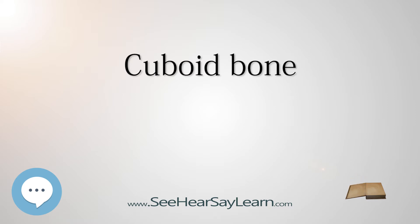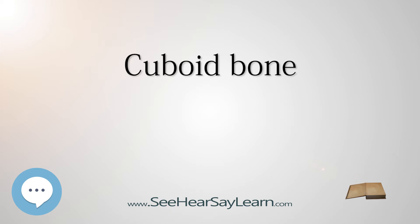The ridge ends laterally in an eminence, the tuberosity, the surface of which presents an oval facet on which glides the sesamoid bone or cartilage frequently found in the tendon of the peroneus longus. The surface of the bone behind the groove is rough for the attachment of the plantar calcaneo-cuboid ligament, a few fibers of the flexor hallucis brevis, and a fasciculus from the tendon of the tibialis posterior. The lateral surface presents a deep notch formed by the commencement of the peroneal sulcus.